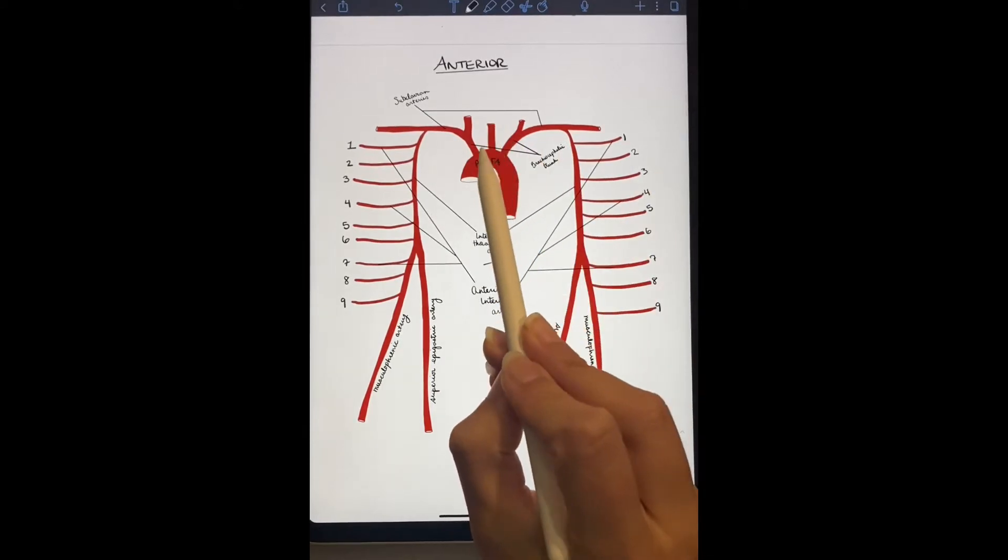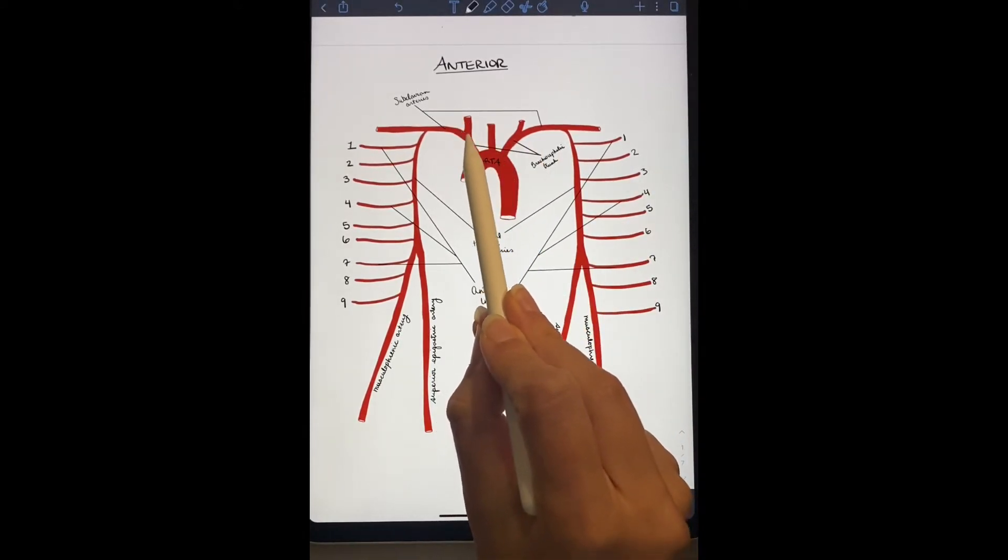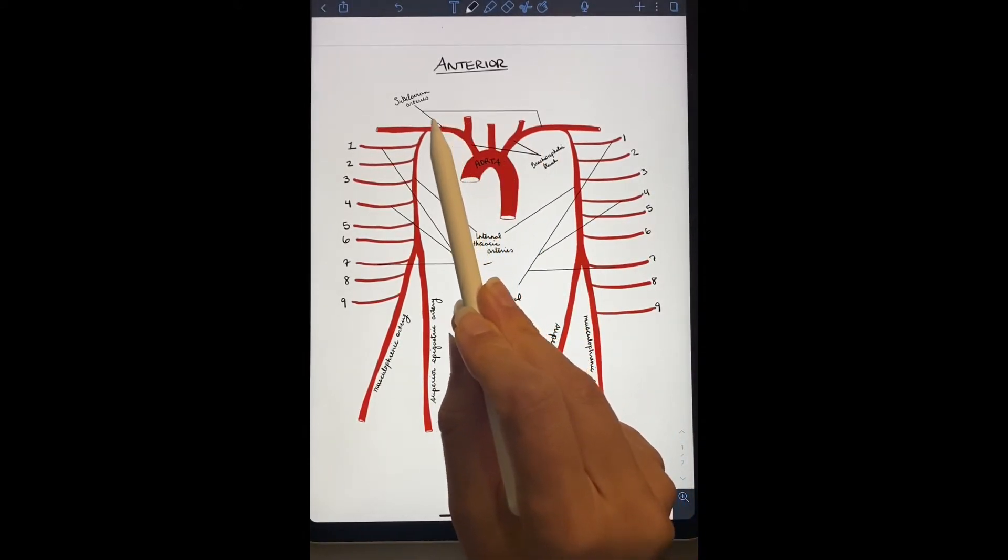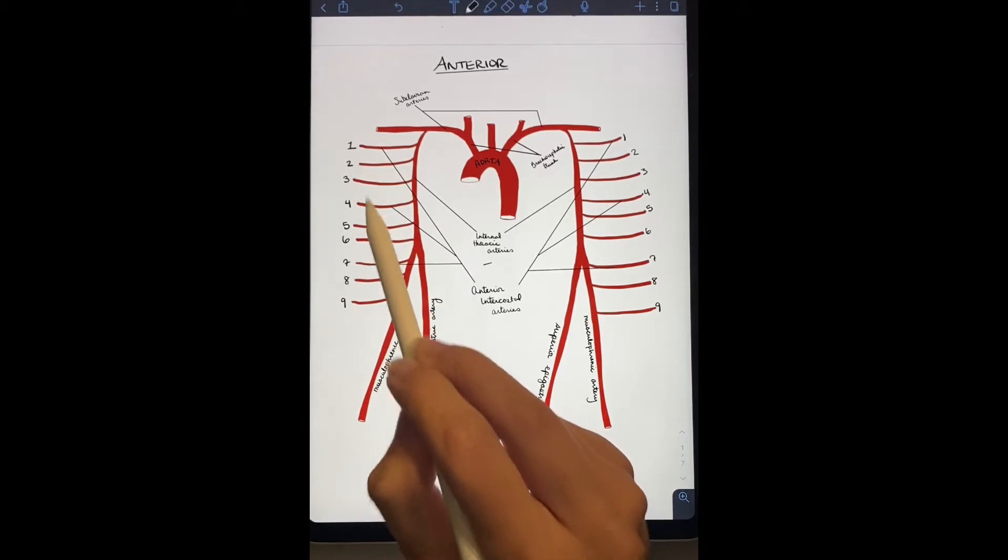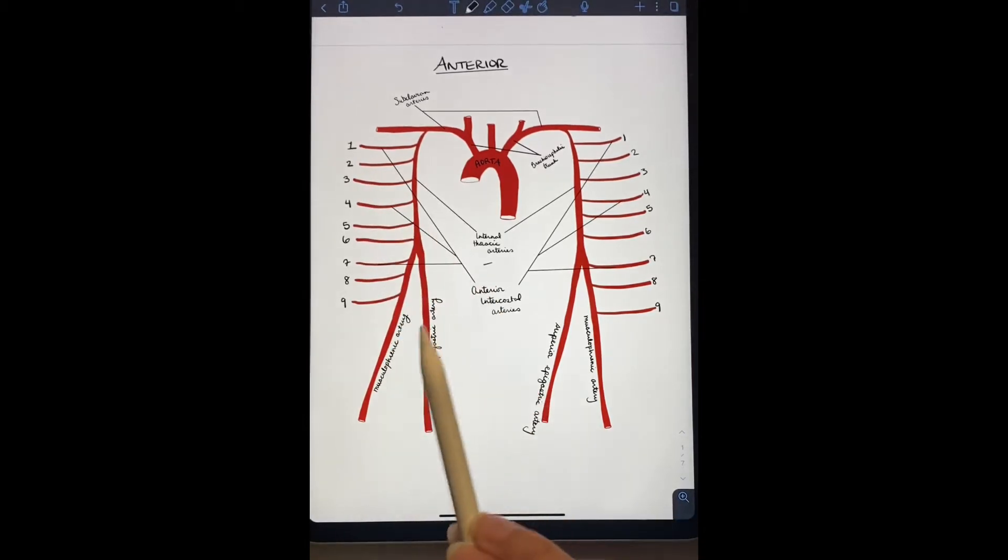Beginning with the aorta, we move through the brachiocephalic trunk, the subclavian artery, and down into the internal thoracic arteries. Anterior intercostal arteries one through six branch off from here. The internal thoracic artery then bifurcates to the superior epigastric artery and the musculophrenic artery from where the anterior intercostal arteries seven through nine branch off.